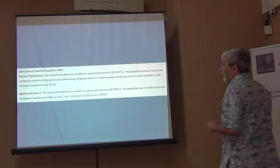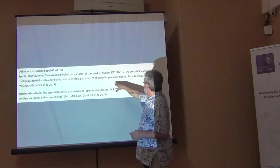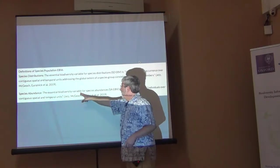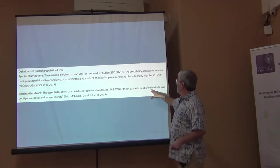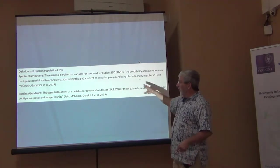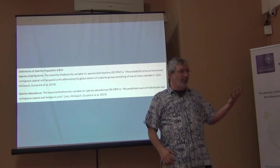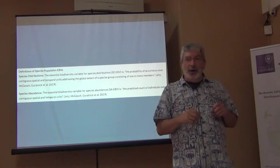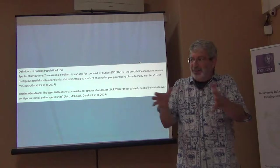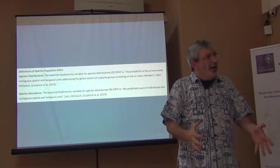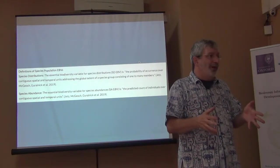The other species population EBV — the essential biodiversity variable for species abundances — is the predicted count of individuals over contiguous spatial and temporal units. So one of them is about this unclear, undefined probability of occurrence — the probability that the species is there — and the other is about the average number of individuals likely to be found there.